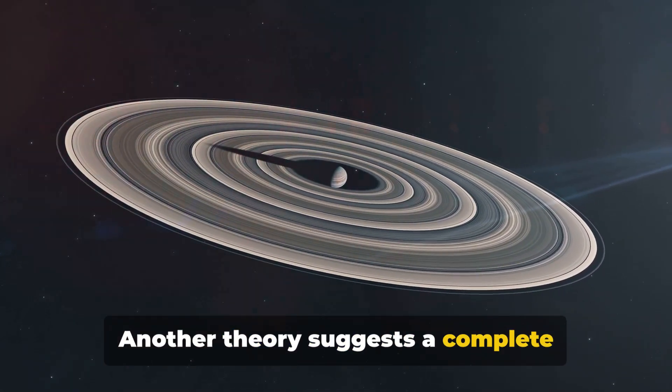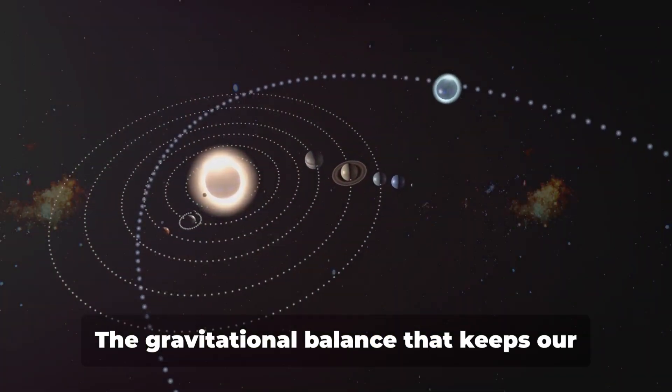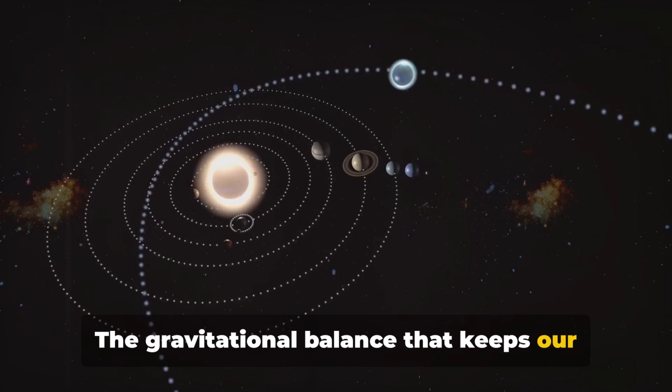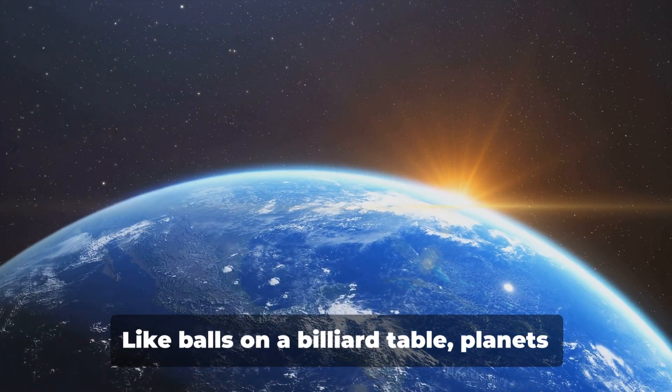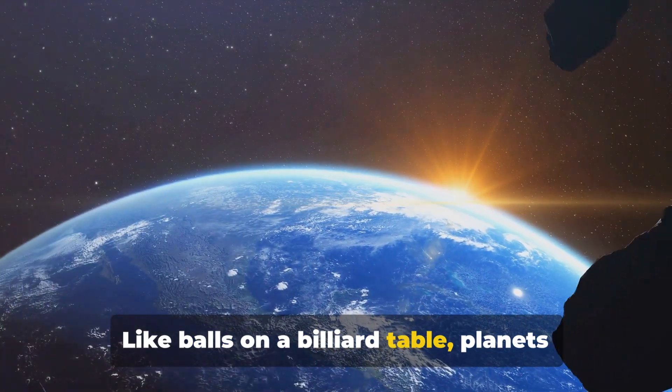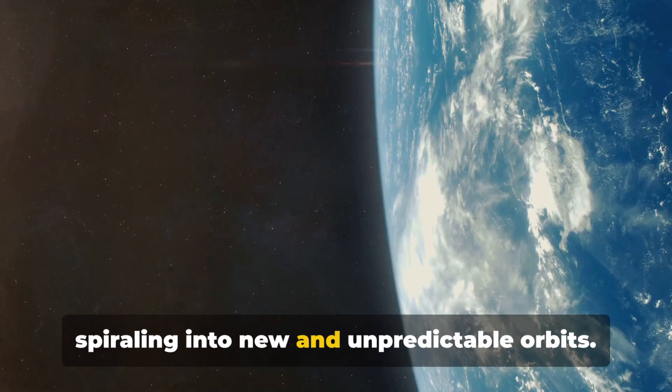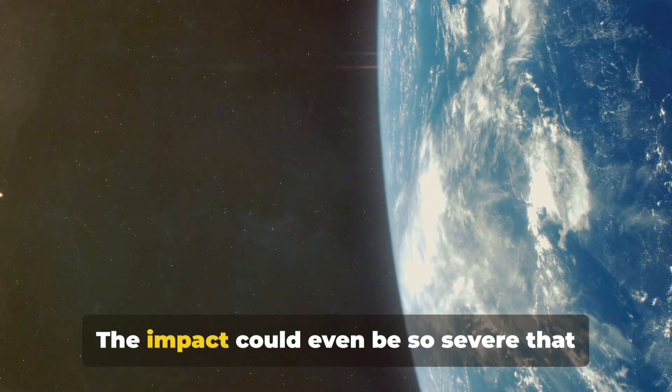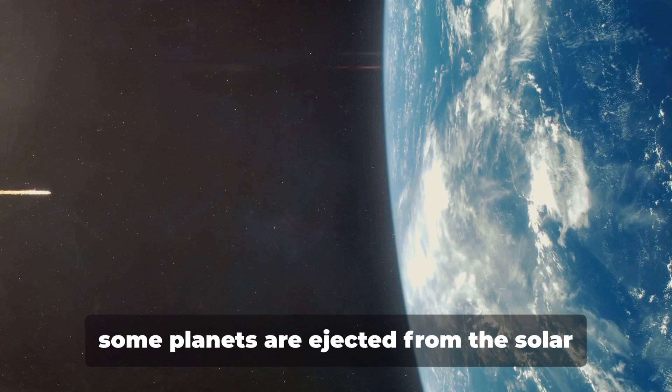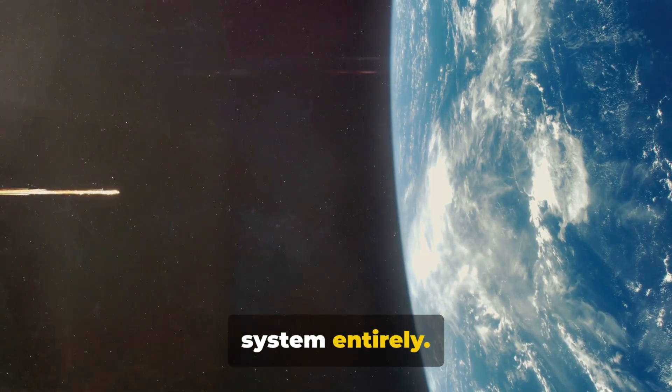Another theory suggests a complete reshuffling of our solar system. The gravitational balance that keeps our planets in their orbits would be shaken. Like balls on a billiard table, planets could be knocked out of their paths, sent spiraling into new and unpredictable orbits. The impact could even be so severe that some planets are ejected from the solar system entirely.